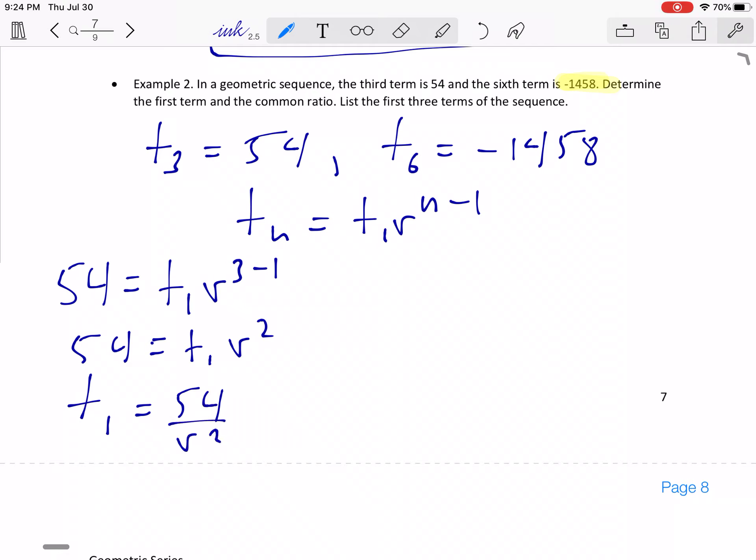So you can't solve something when there's two things you don't know. So I don't know what T1 is and I don't know what R is, so I can't get the answer for that. But I'll come back to that. Now let's do the same thing for T6. So here's negative 1458 is equal to T1 and R to the power of 6 minus 1, R to the power of 5.